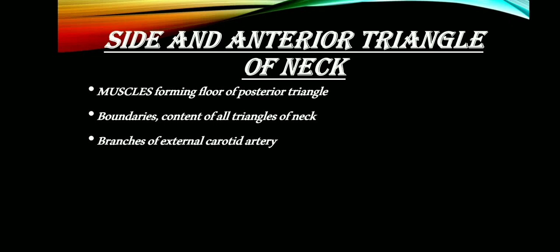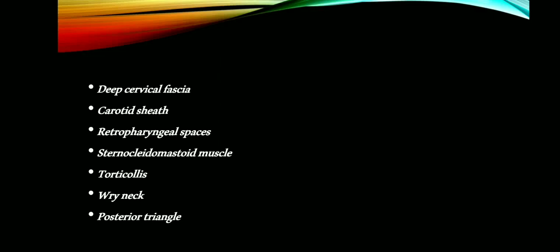Moving on to the next chapter, that is side of neck and anterior triangle of neck. The various enumerate questions from this chapter are: muscles forming the floor of the posterior triangle; boundaries and contents of all the triangles of the neck; and branches of the external carotid artery. Moving on to the short notes that can be asked: deep cervical fascia and carotid sheath — these two are very important.